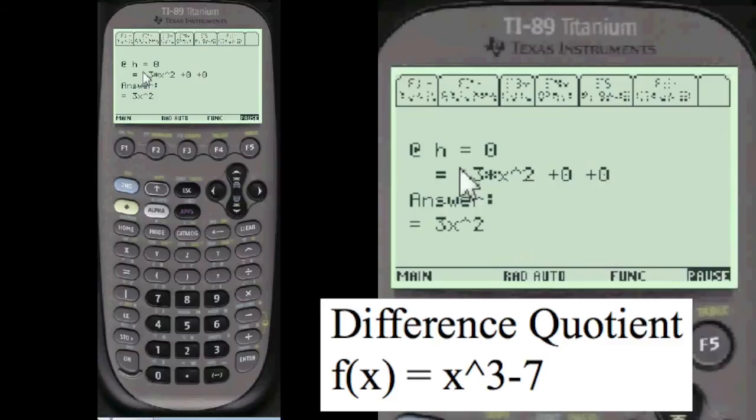And at h equals 0, turns out to be 3x squared plus 0 plus 0, which is 3x squared. Pretty neat, huh?